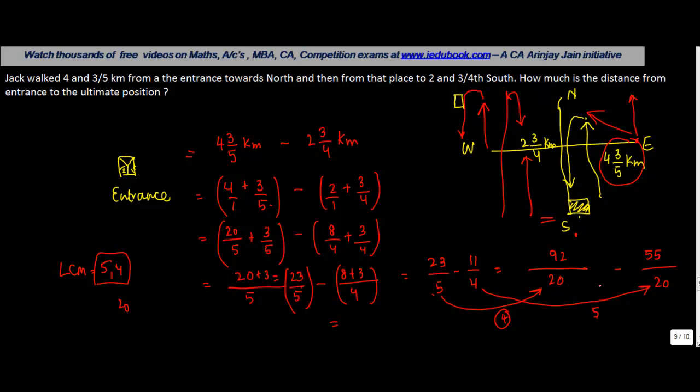Now, given that the denominators are common, I will take the denominator as 20 and I simply subtract 92 minus 55. 92 minus 55 gives me 32 plus 5, 37, divided by 20, which is the answer.